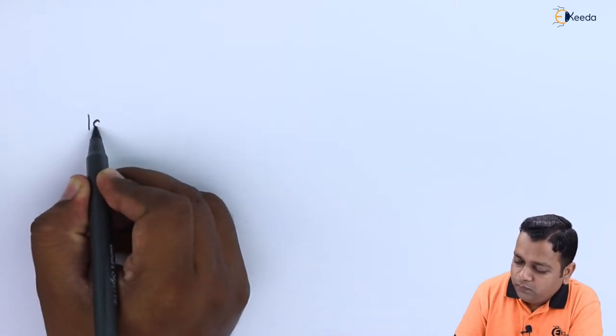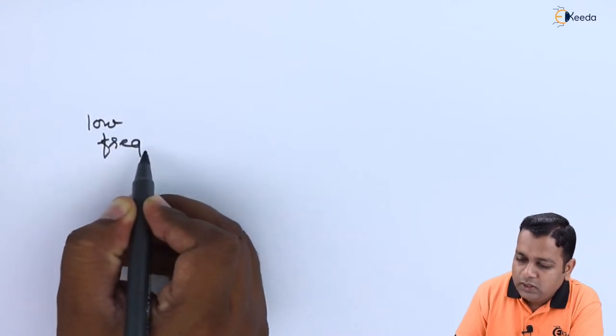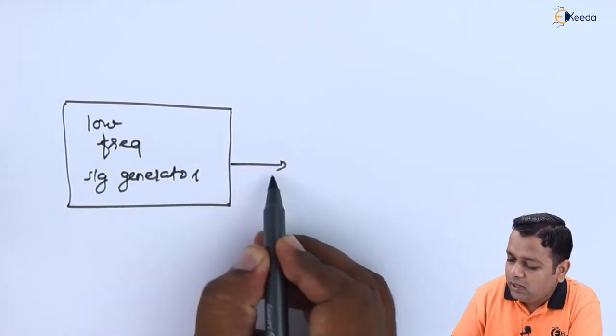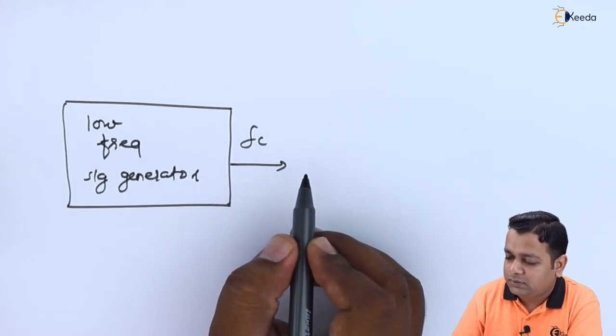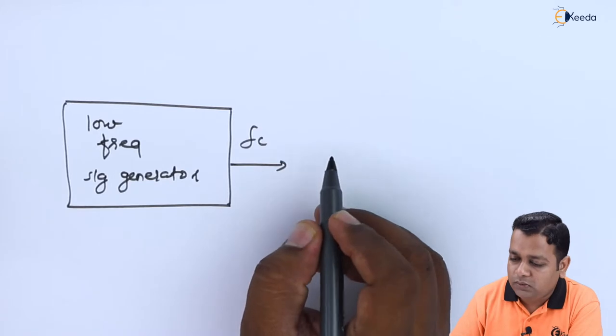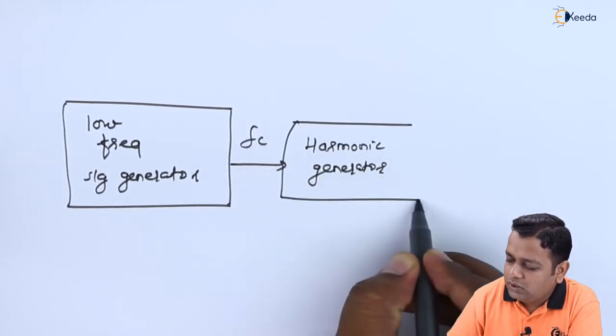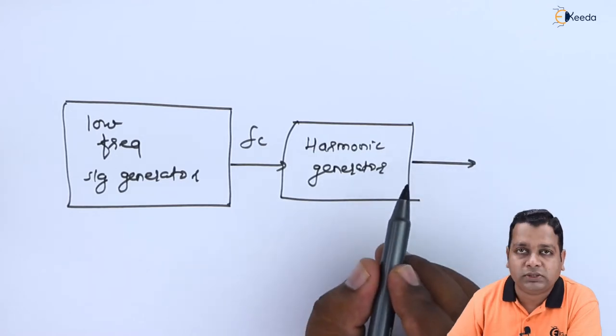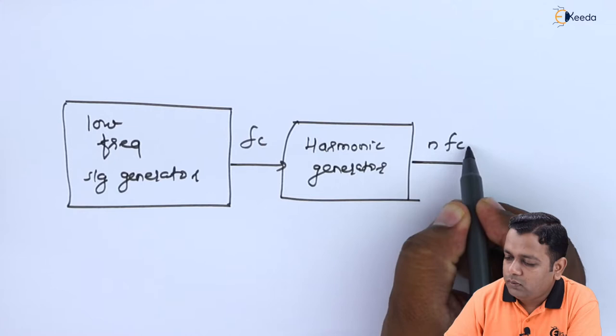Further, the broad classification or categorization of frequency measurement techniques can be in terms of electronic and mechanical. The generalized block diagram for calculation of the unknown frequency value uses a low frequency signal generator. The low frequency signal generator gives us a known frequency value, denoted by f_c, which is fed as input to the harmonic generator. The harmonic generator along with the low frequency generator gives us the actual signal with the known frequency value.